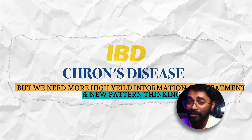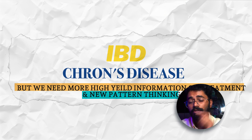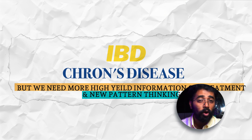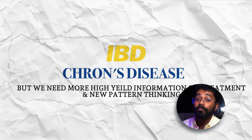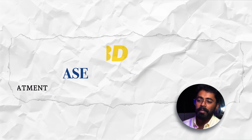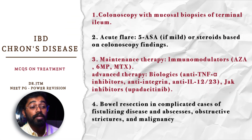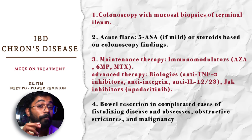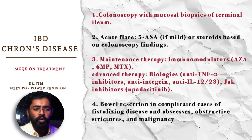The most probable answer is inflammatory bowel disorder. Among IBD subtypes, this mostly looks like Crohn's disease because of watery diarrhea, abdominal pain, positive calprotectin, elevated ESR and CRP, and anemia of chronic disease. For diagnosis, colonoscopy with mucosal biopsy of the terminal ileum will give you an appropriate diagnosis — terminal ileum is your MCQ point for Crohn's disease.